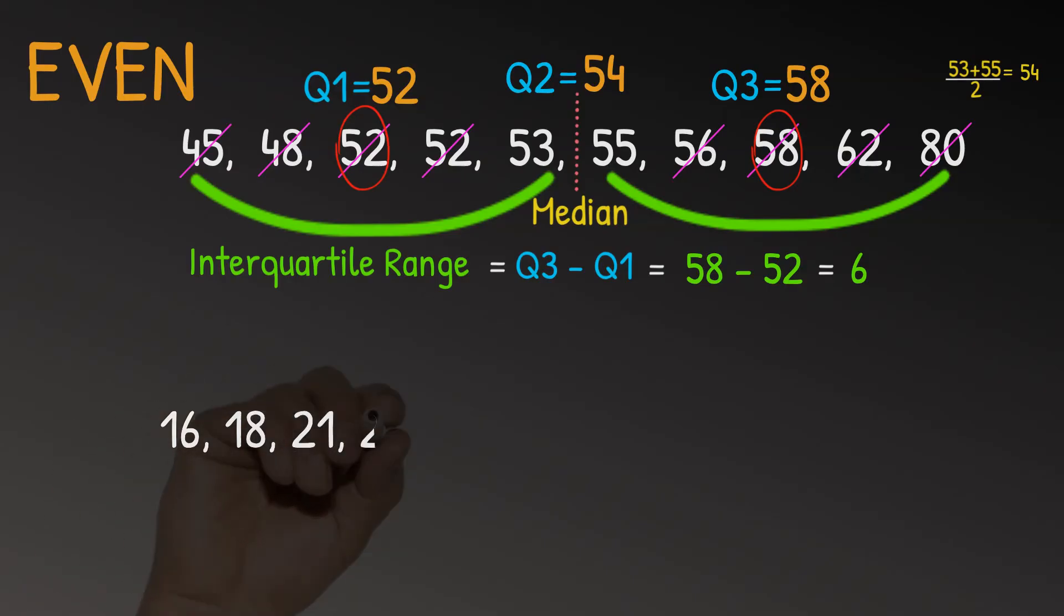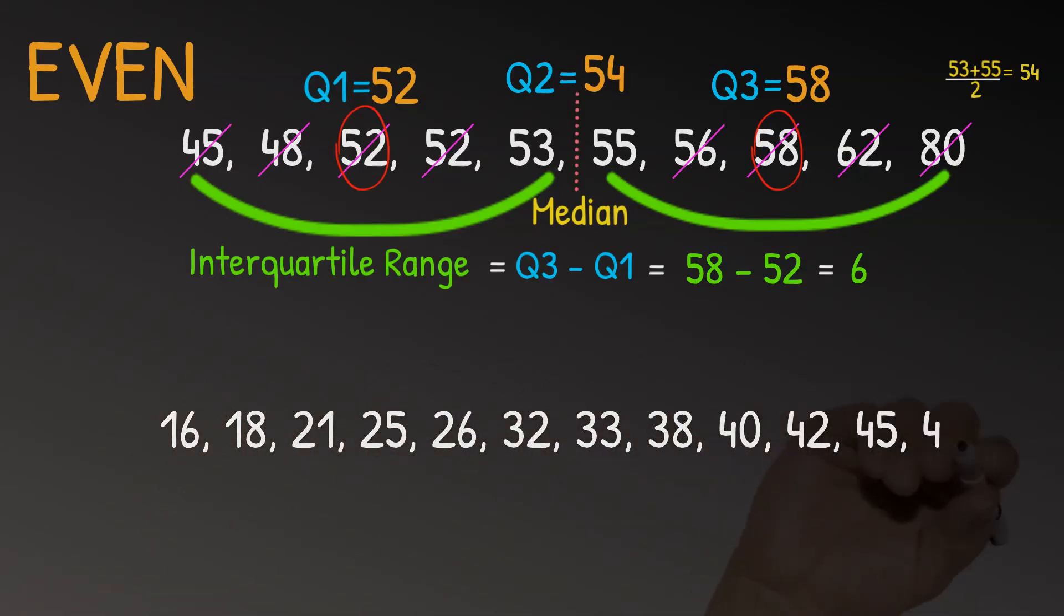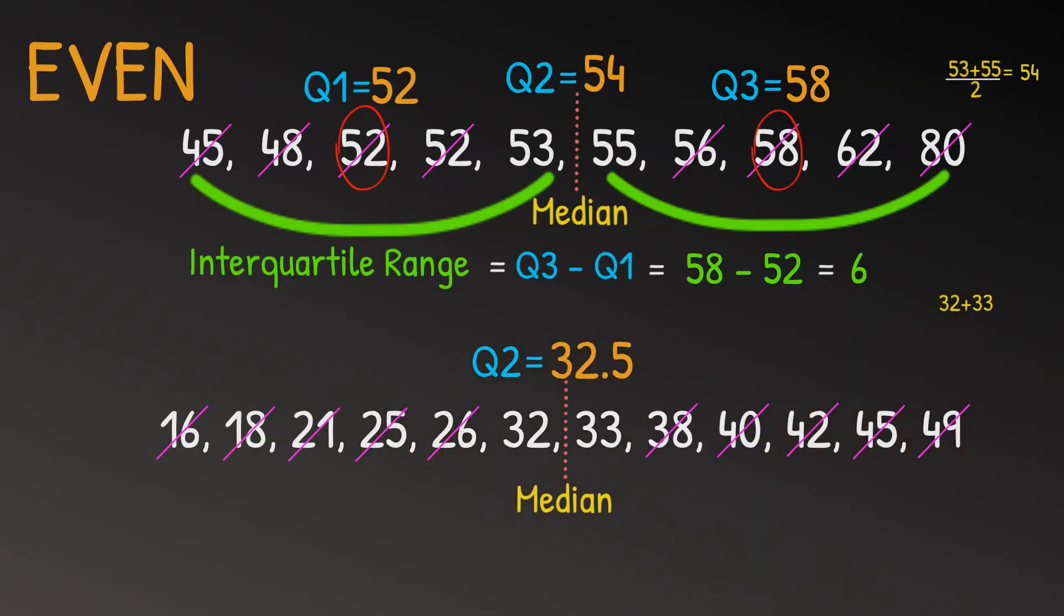So that data set had 10 numbers. But what happens if we have, say, 12 numbers? Well, in this scenario, for instance, with this data set, if we cross off the numbers from either end, we get to the middle here, which is in between 32 and 33. So our median or Q2 is equal to 32.5 or 32 plus 33 divided by two.